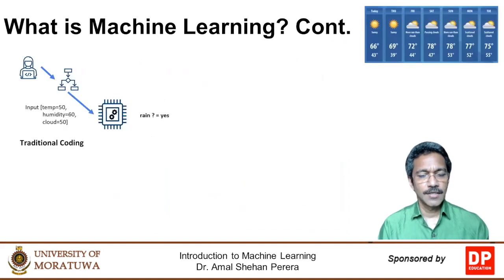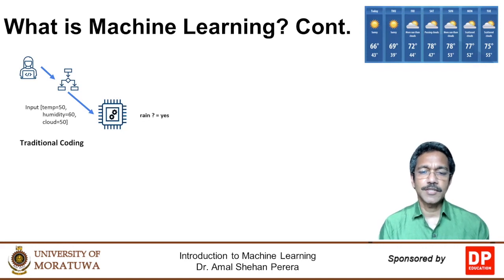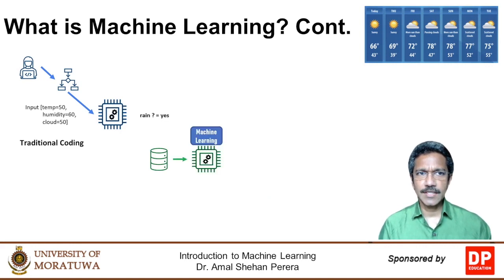In the traditional way of coding, we design the algorithm, write the code, and get the computer to execute it. When we give the input — such as the temperature, cloud cover, and humidity — the system, based on the algorithm we have written, will be able to tell us whether it's going to rain or not. But when using a machine learning approach, we start with the data. We give the data to a machine learning algorithm and ask it to come up with a model or system that can tell us whether it's going to rain or not based on the data given.